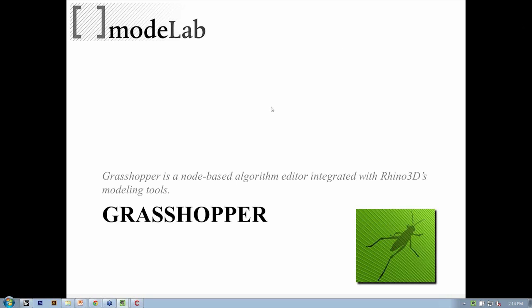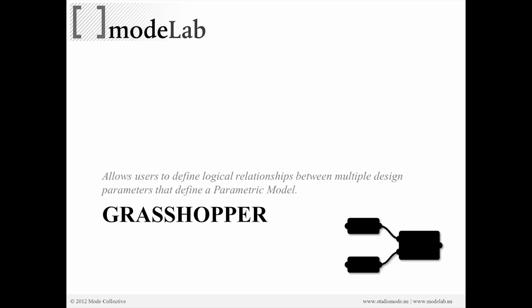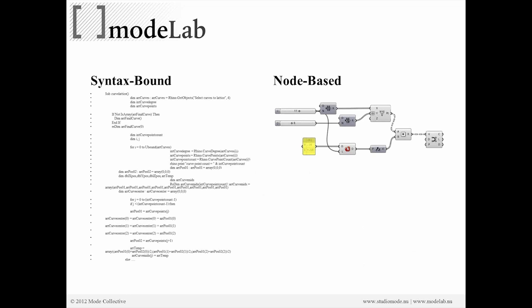Let's dive into the webinar content. We said we were going to look at scripting with Python in Grasshopper, so before we get started we need to understand what Grasshopper is. Grasshopper is a node-based algorithm editor integrated with Rhino 3D's modeling tools. What Grasshopper does is allow users to define logical relationships between multiple design parameters, thereby defining a parametric model. Grasshopper, being node-based, allows us to visually define the relationships within a program — connecting outputs to inputs, creating a logical diagram that results in some particular outcome.